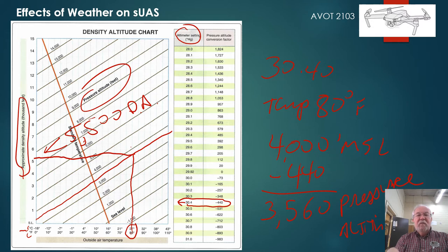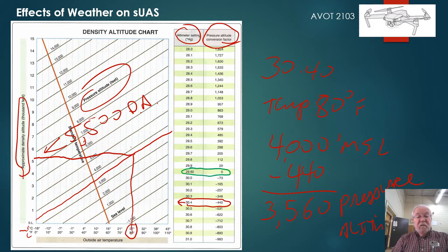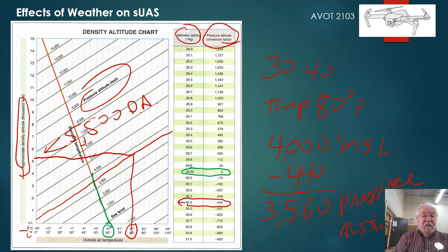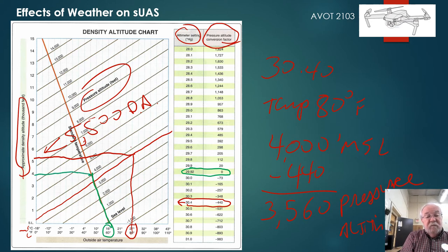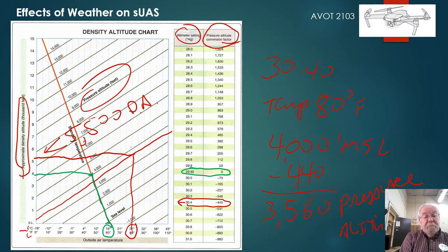One thing to remember: when a chart says 'factor,' that's something you apply to another number. In this case it has a minus or a plus. When it says 29.92, it's a zero factor because that's standard. On a normal standard day at 59°F or 15°C, if you go up on the chart and go straight across, you'd find 4,000 feet — because on a standard day, pressure altitude and density altitude will be the same.